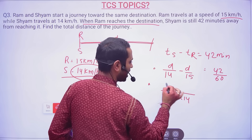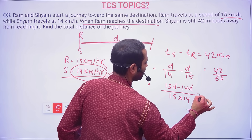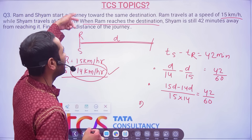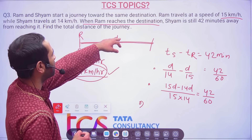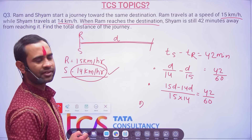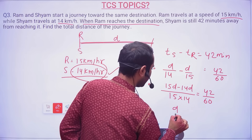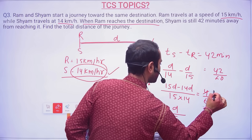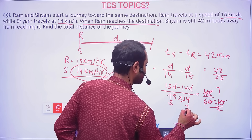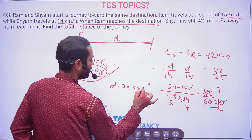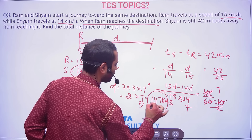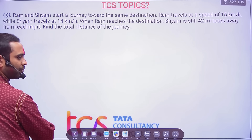Setting up: D/14 − D/15 = 42/60. This gives 15D − 14D over 15×14 = 42/60, so D/210 = 42/60, therefore D = 210 × 42/60 = 147 km. So 147 kilometers is the correct answer for this problem.